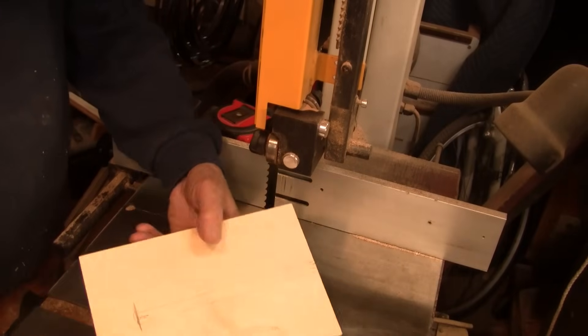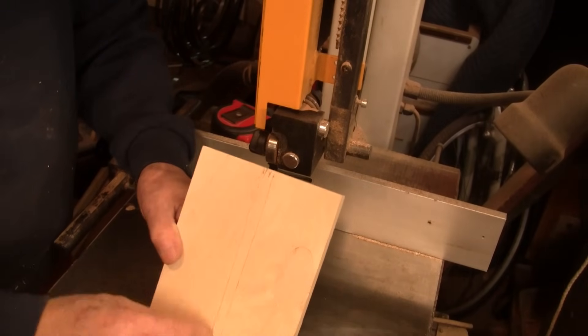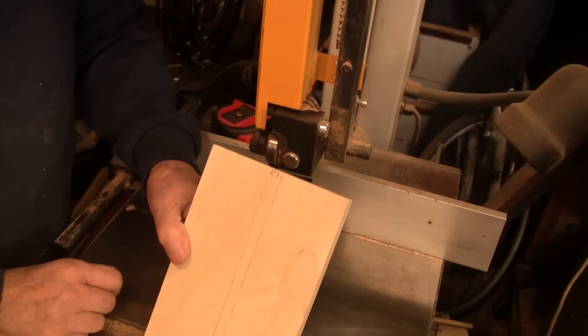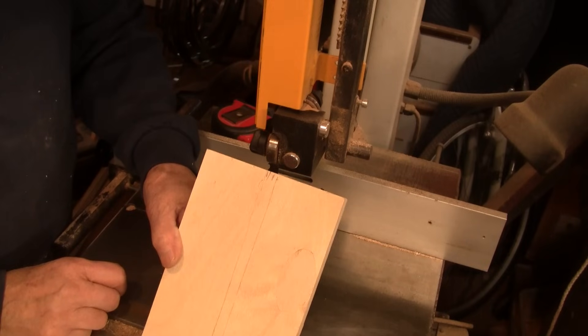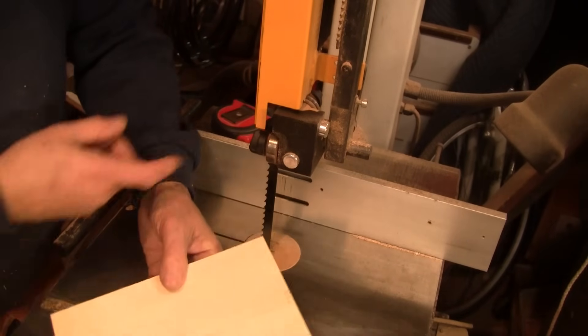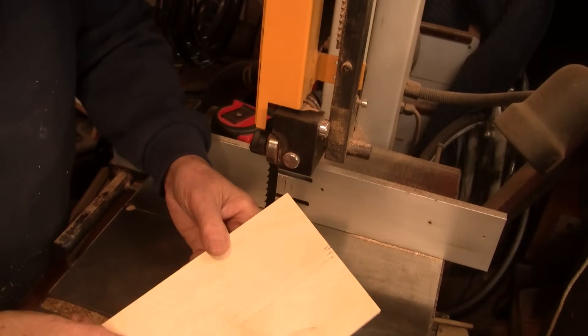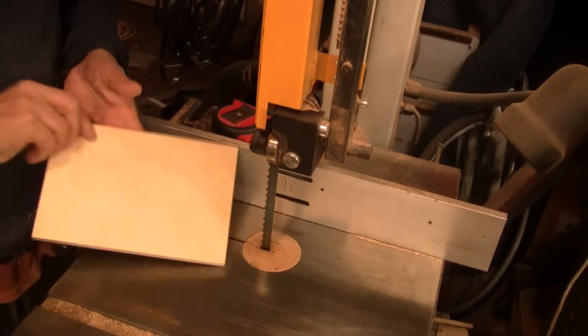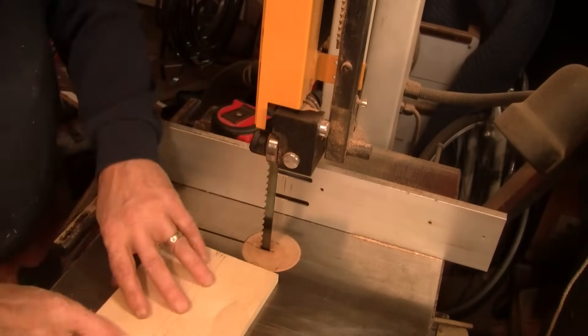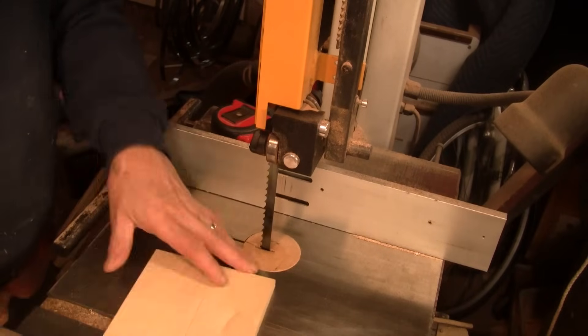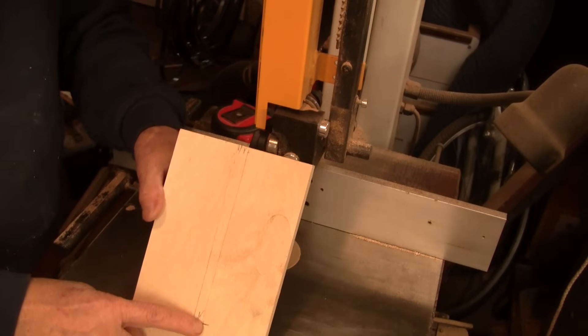Alright, I'm at the bandsaw, and that slot that I have to cut in here, you could use a router. If you have a router table, I don't want to get mine down and set it up. I'm going to use my bandsaw, and this is similar to the way I did it on the table saw. I'm going to make a cut, I'm going to flip it. I'm going to go down to this line right here.